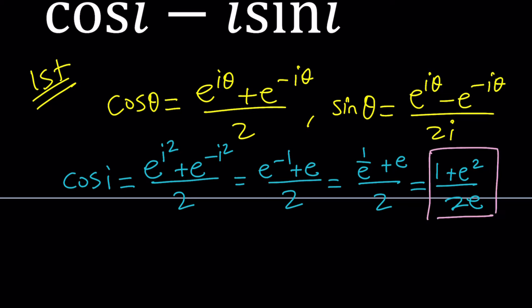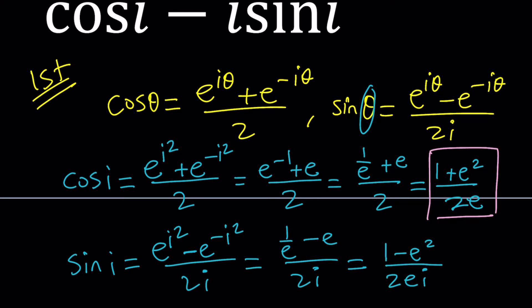Let's go ahead and evaluate sine i, and then we're going to plug it in. Sine i, if you replace theta with i here, we're going to get e to the i squared minus e to the negative i squared divided by 2i. Don't forget, there's an i at the bottom, and there's a minus sign. That's what makes it different from cosine. i squared is negative 1. This is 1 over e minus e divided by 2i, and that will be 1 minus e squared divided by 2ei.